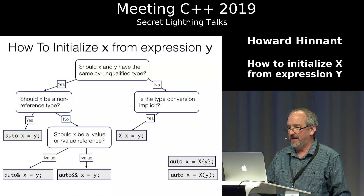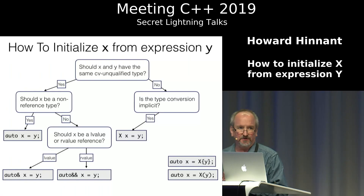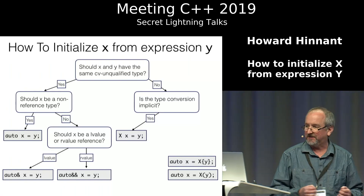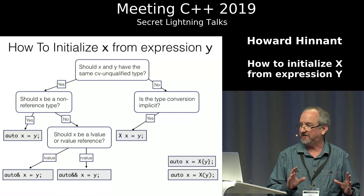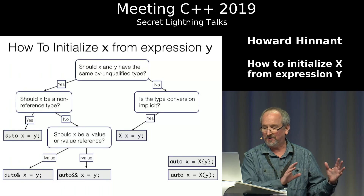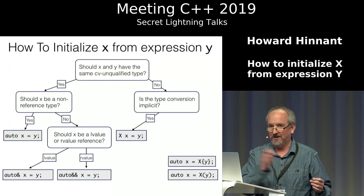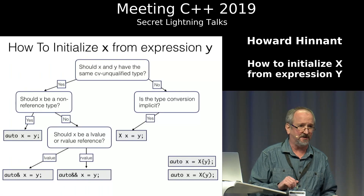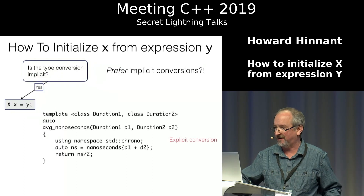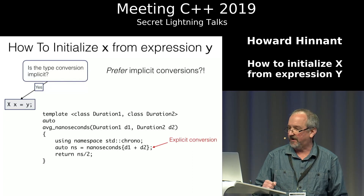When we get to making a type conversion, the next question is: is it an explicit or an implicit type conversion? If it's implicit, my claim is that this is the place where you don't want to use auto. You say `TypeX x = y`. This is the oldest initialization in C++ — legal back in C++98. I want to explain why I think this is the right way to do it.